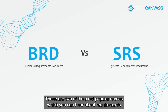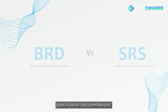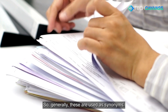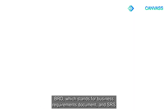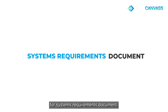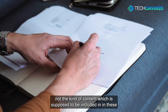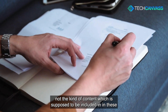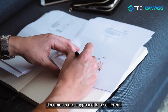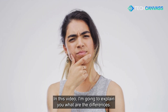These are two of the most popular names which you can hear about requirements specification documentations. Generally these are used as synonyms. BRD stands for Business Requirements Document and SRS for Systems Requirements Document. But even though they are used as synonyms, they are actually not. The kind of content which is supposed to be included in these documents is supposed to be different. In this video, I am going to explain the differences.